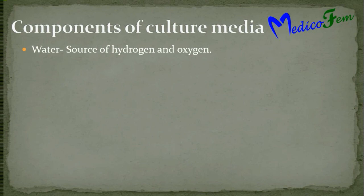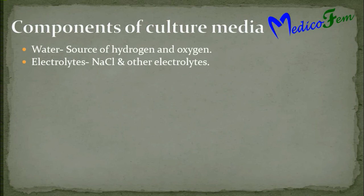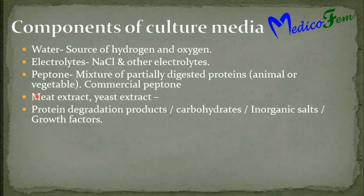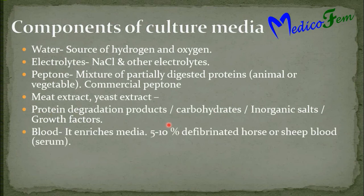Components of the culture media include water, which acts as a source of oxygen and hydrogen; electrolytes like sodium chloride; peptone, which is a mixture of partially digested protein. Peptone can be of animal origin or vegetable source, and can also be prepared in our laboratory. Meat extract or yeast extract, protein degradation products, carbohydrates, inorganic salts, and other growth factors. Blood enriches the medium; we can add 5–10% defibrinated horse or sheep blood.